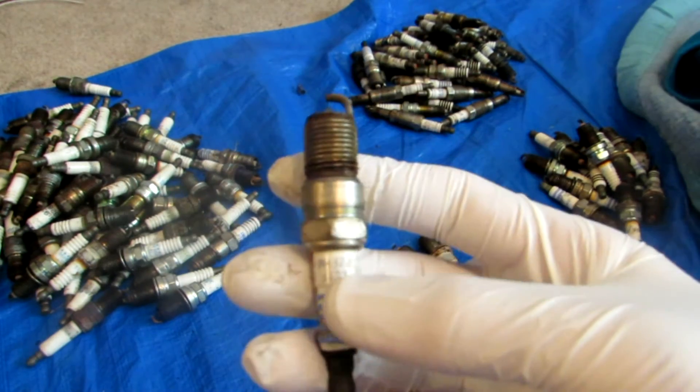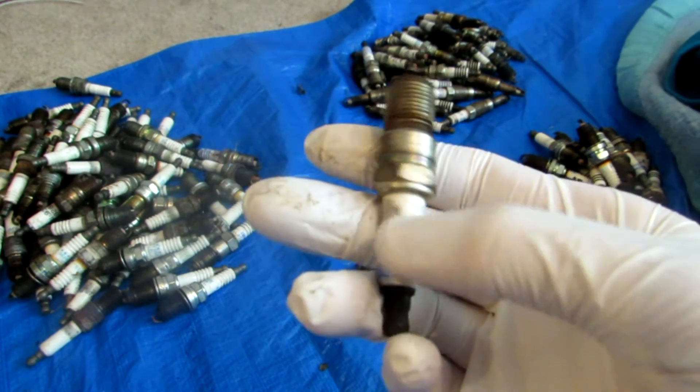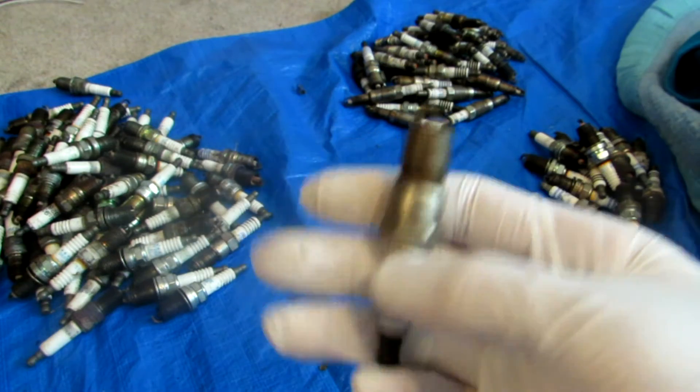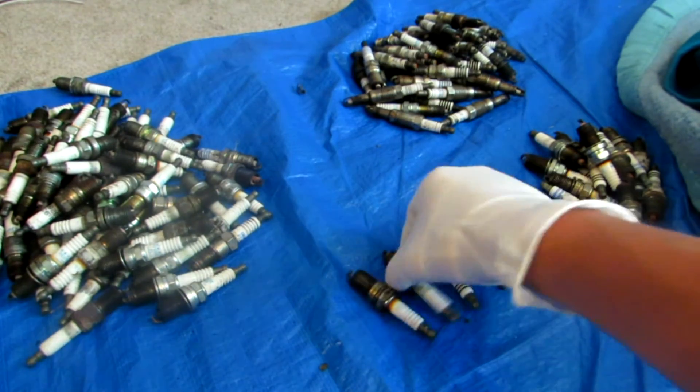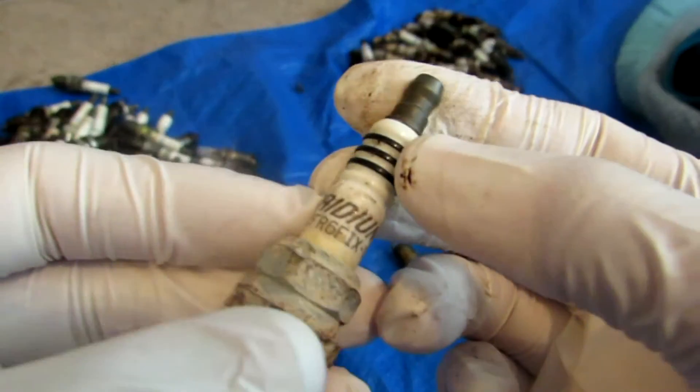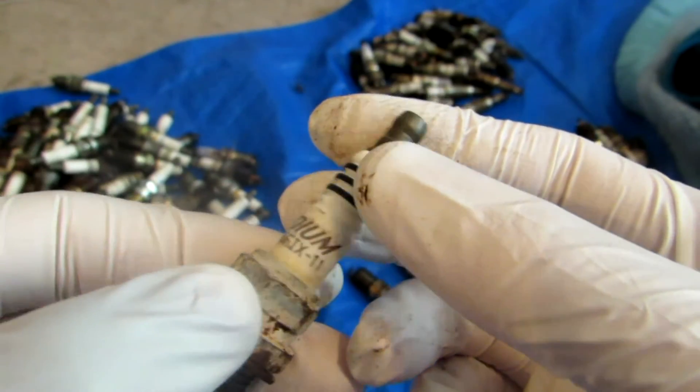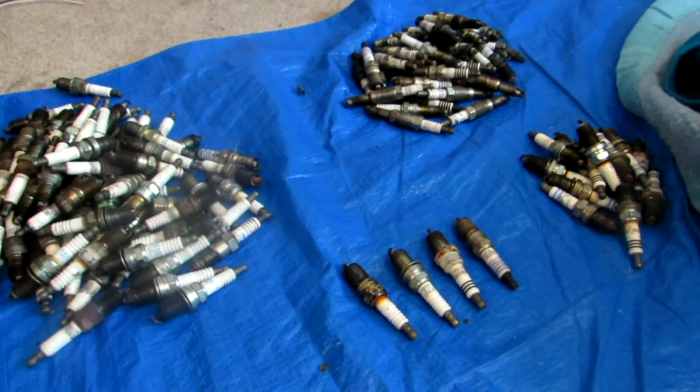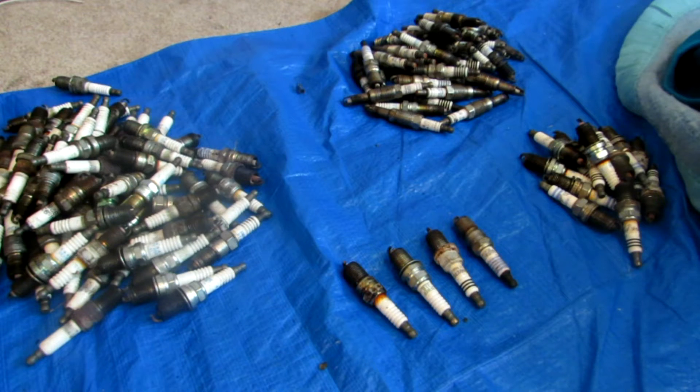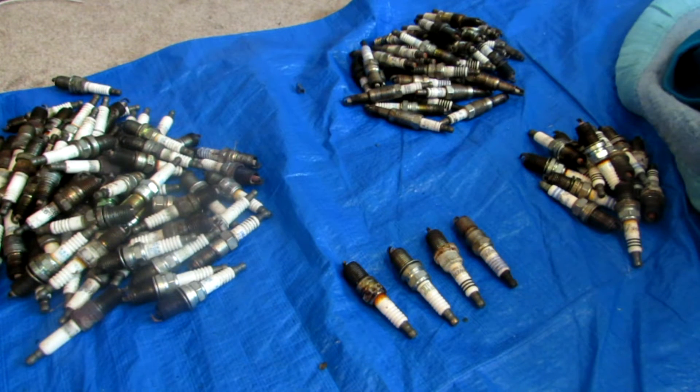Although not all spark plugs contain these precious metals, higher quality spark plugs will use a bit of Platinum and Iridium in the tip where the spark is generated, as they have a longer lifespan due to the high melting points and inertness of both metals. I have been collecting old spark plugs from my local mechanic for a few months, so today we will process them to separate and isolate the Platinum and Iridium.